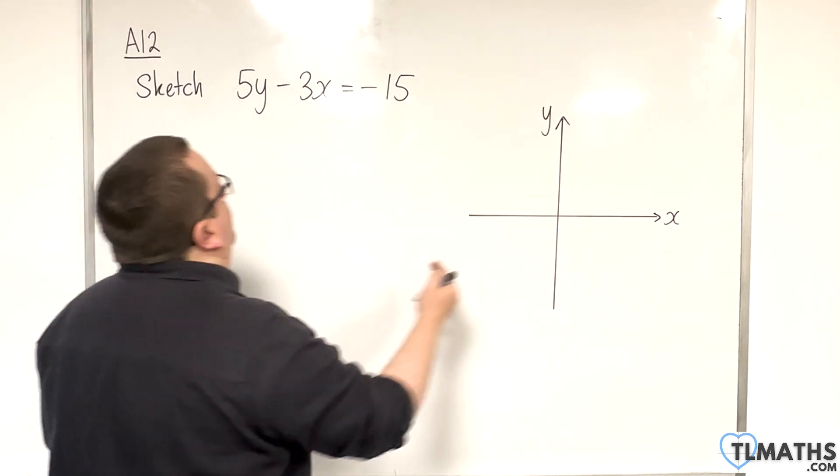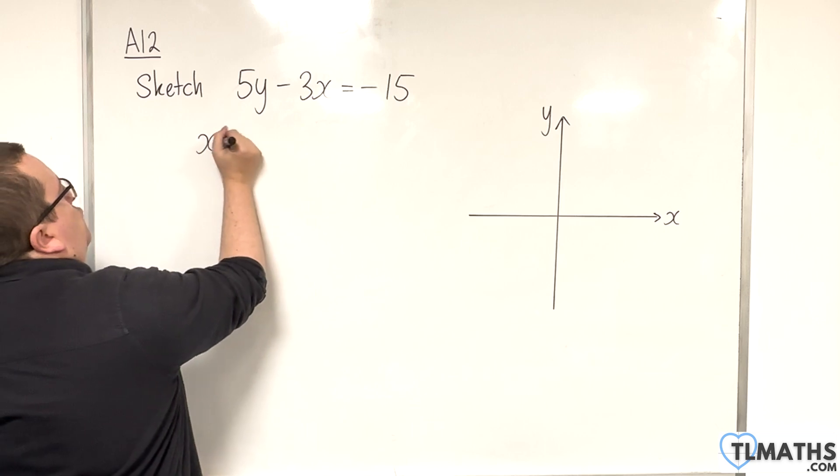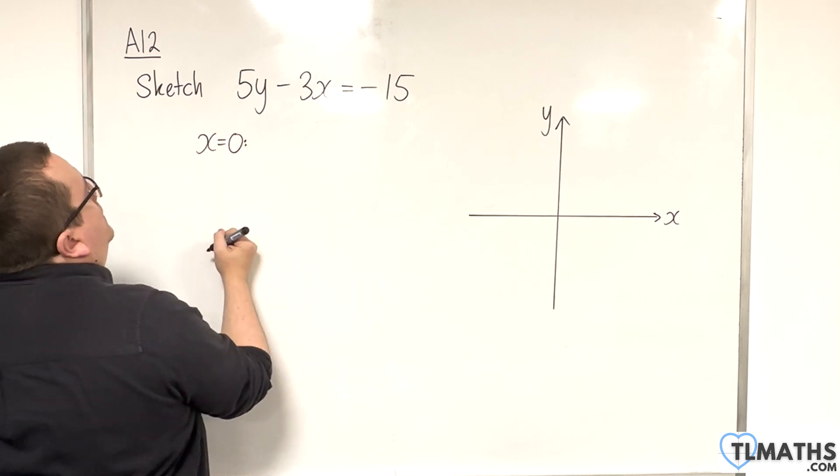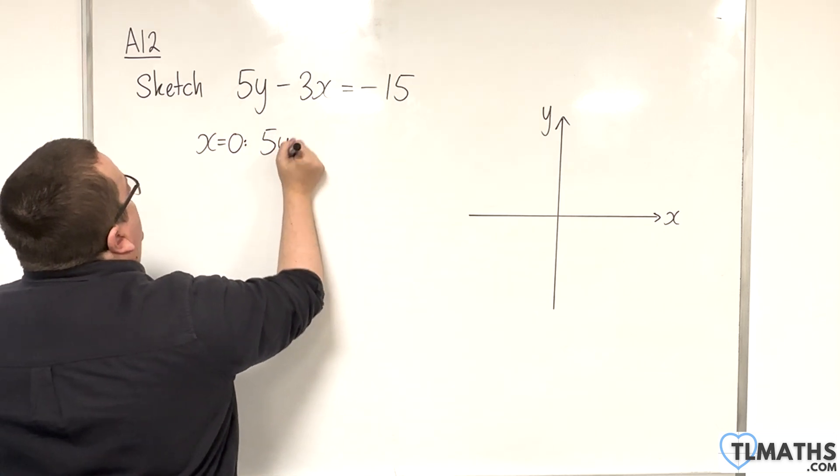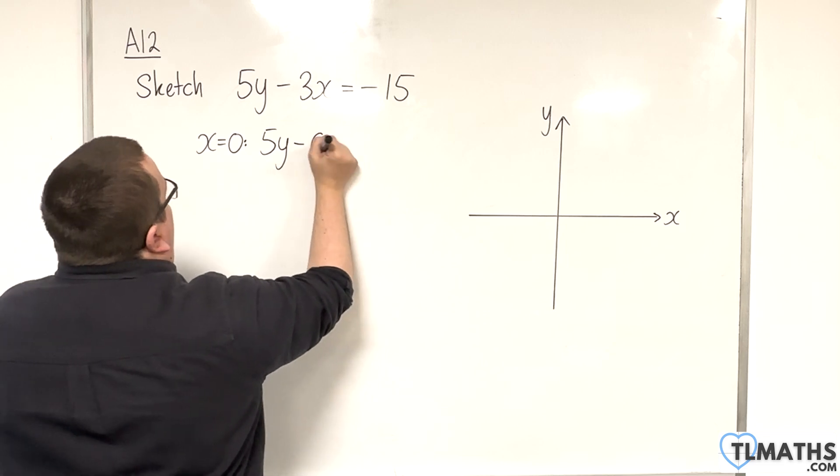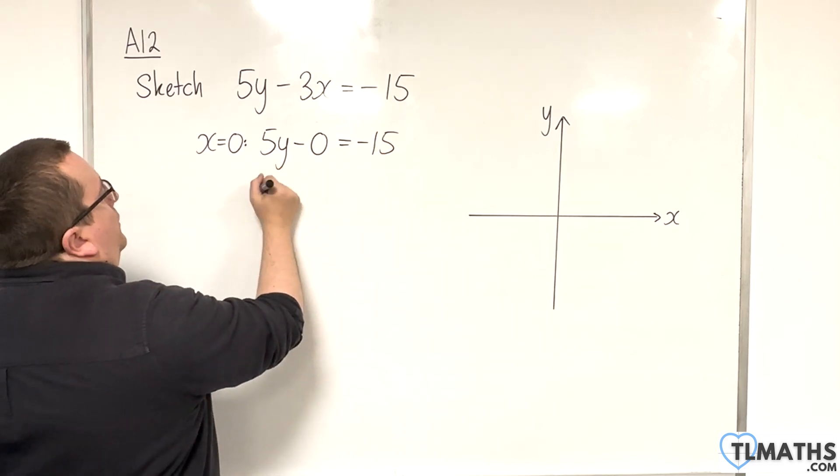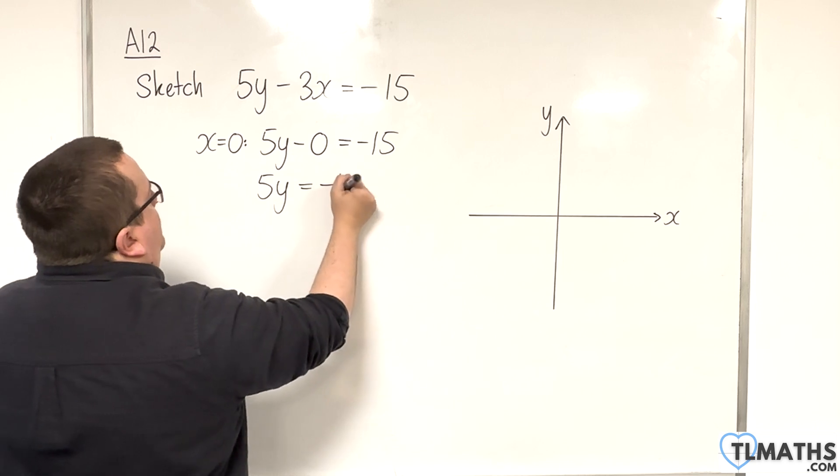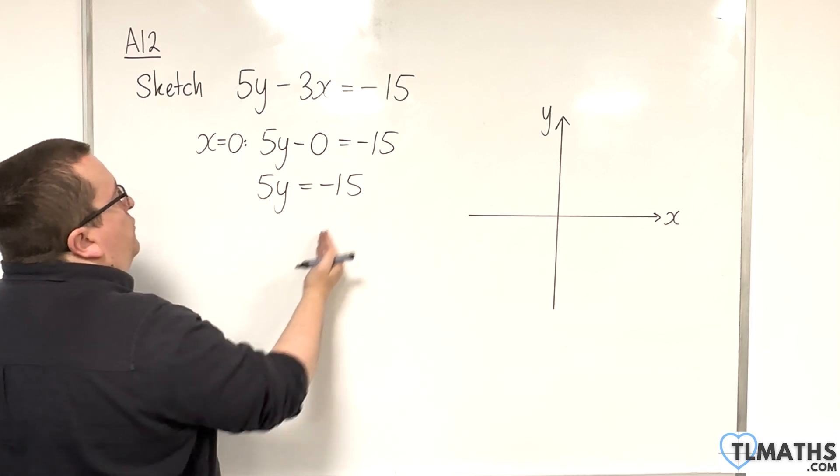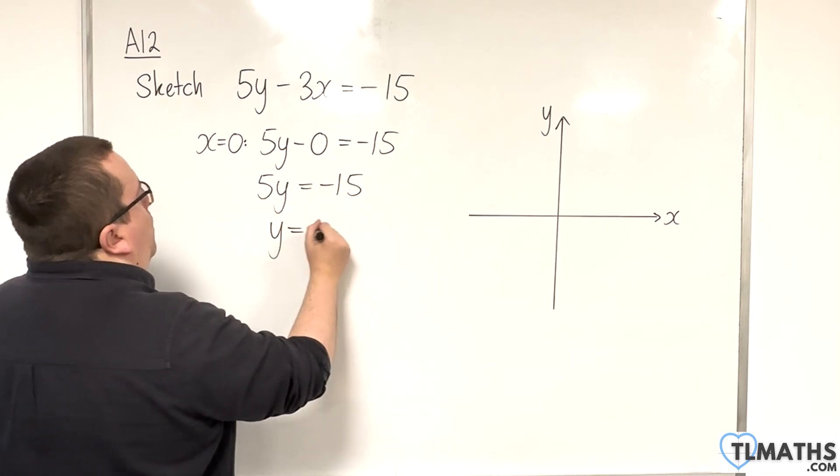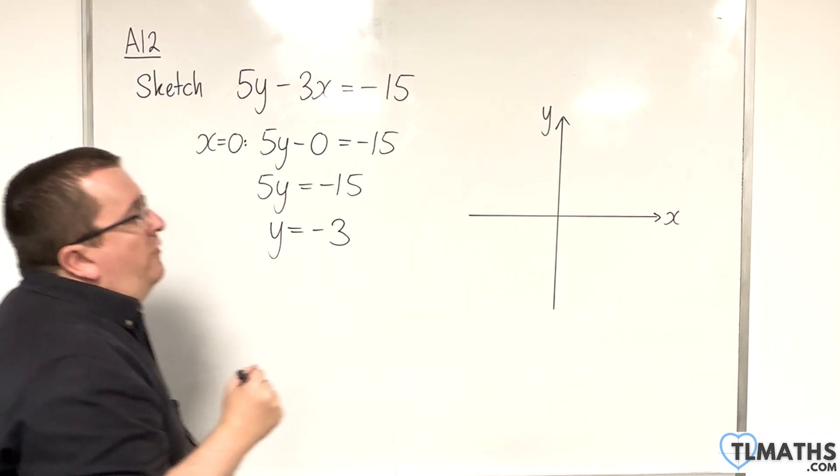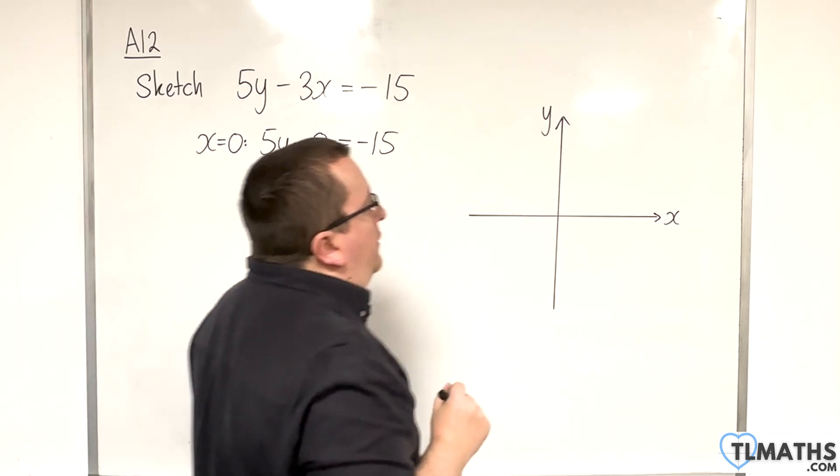Let's work out where it crosses the y-axis first by putting in x is 0. So, when x is 0, we're going to have 5y take away 3 lots of 0 is equal to negative 15. So, 5y is equal to negative 15. If we divide through by 5, y is going to be equal to minus 3. So, we're crossing through minus 3 on the y-axis.